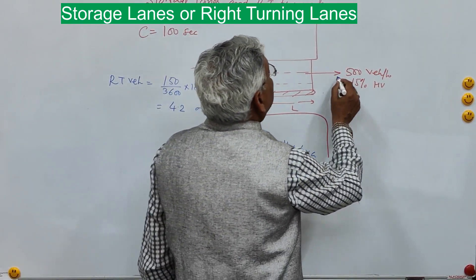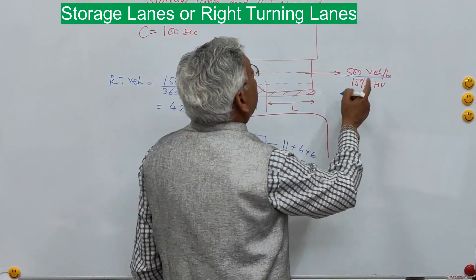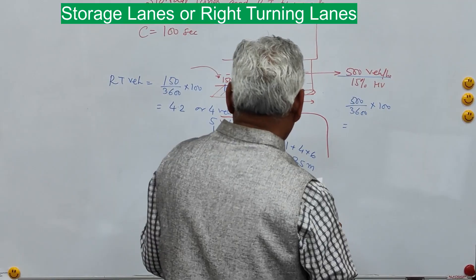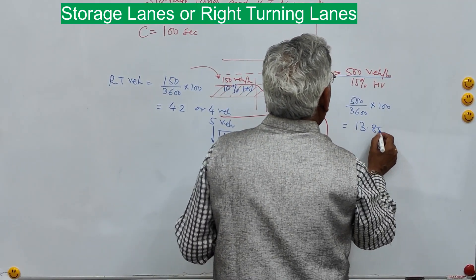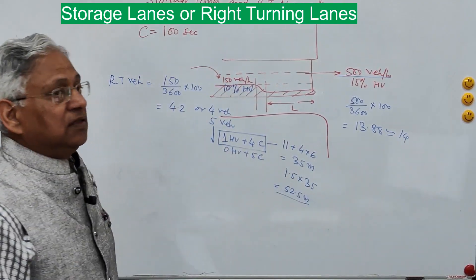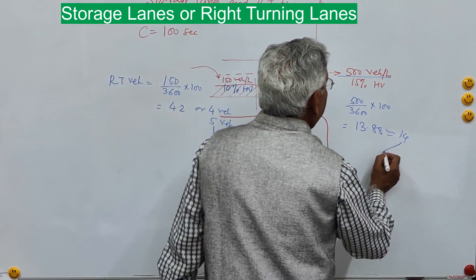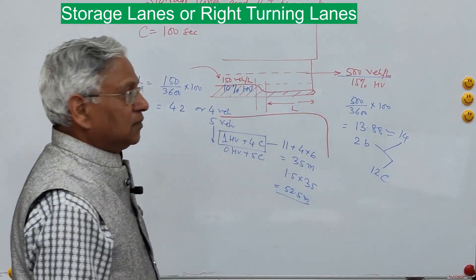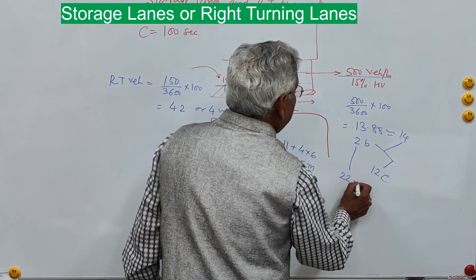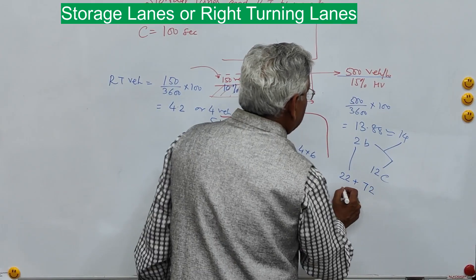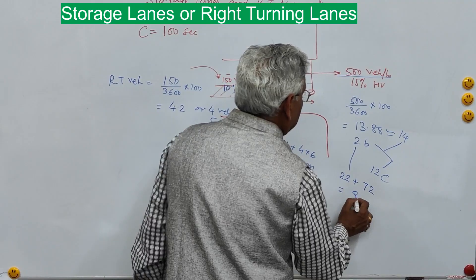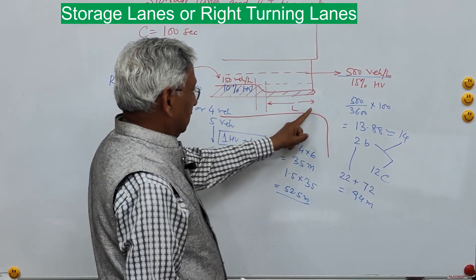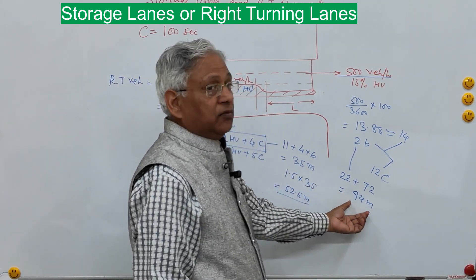Now let us see how many vehicles are arriving in through movement at 500 vehicles per hour: 500 divided by 3600 into 100 cycle length equals 13.88, approximately 14 vehicles. With 15 percent buses, that gives approximately 2 buses and 12 cars. 2 buses means 22 meters plus 12 cars means 72 meters, giving a total of 94 meters. So if you are providing a 42-meter length for the right turning lane, this will be blocked by the 94-meter through traffic queue.